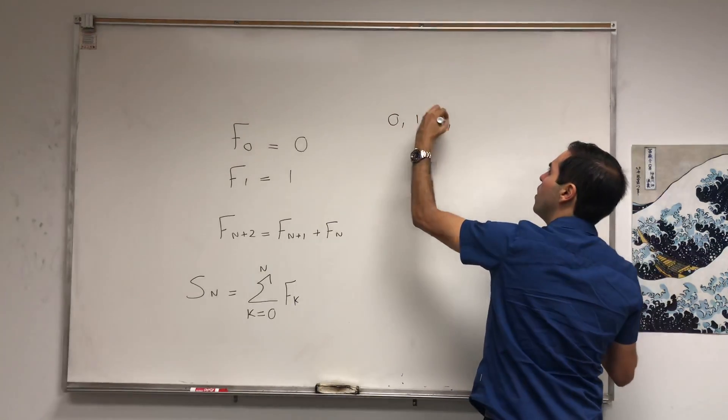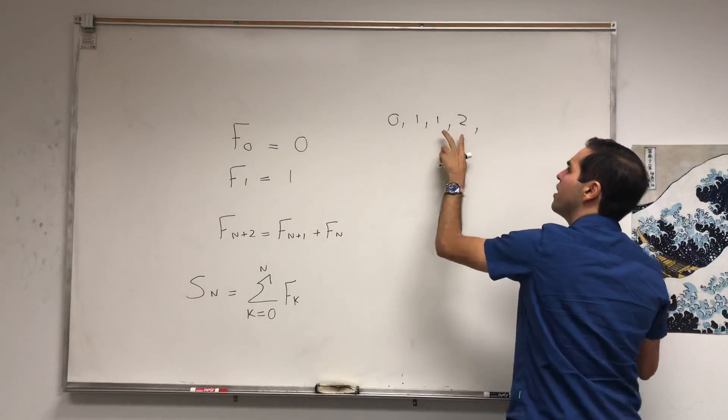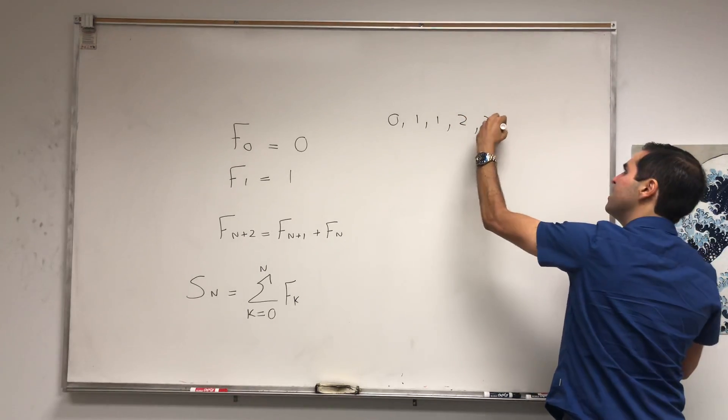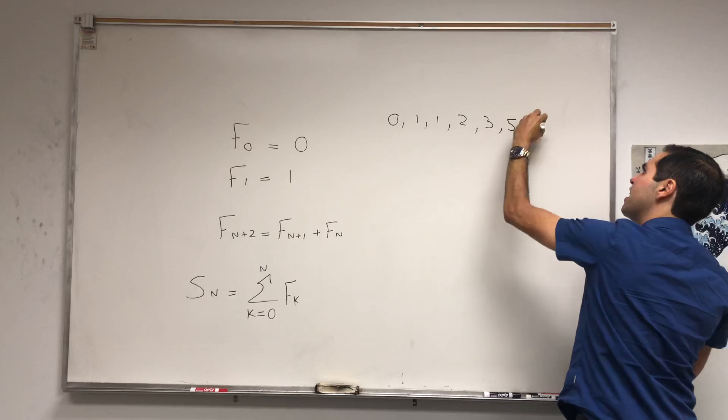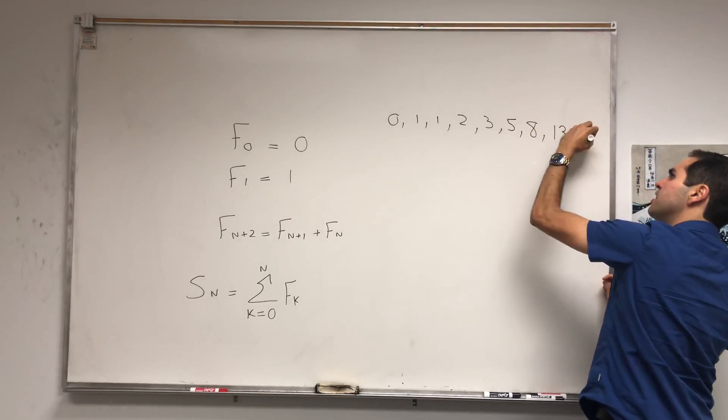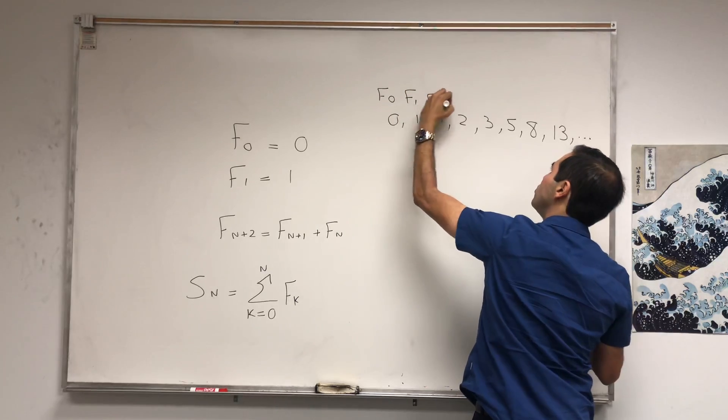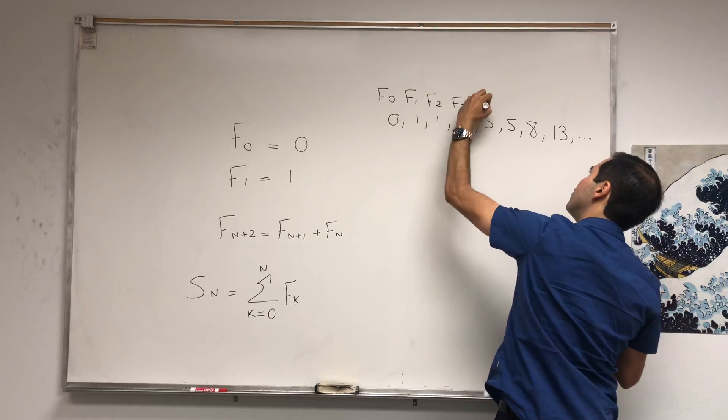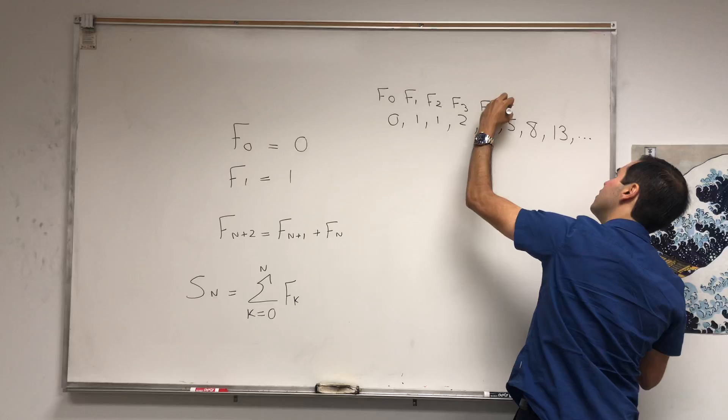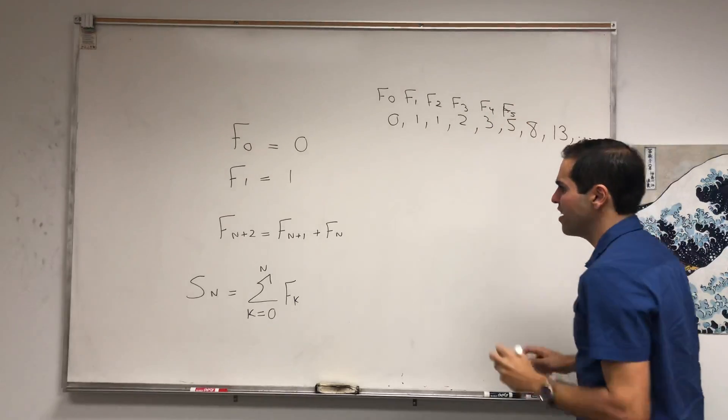And then the next term is 3, and then 5, and then 8, and then 13, et cetera. So this is F0, F1, F2, F3, F4, F5—that's all we need for now. Let's calculate Sn for various values of n.